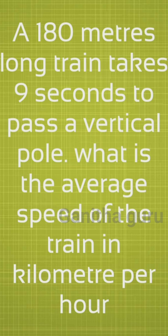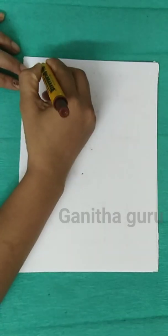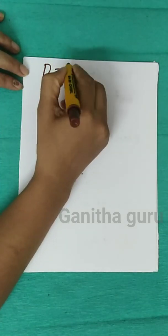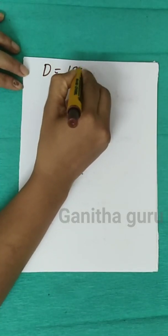A 180-meter long train takes 9 seconds to pass a vertical point. What is the average speed of the train in km per hour? The distance is 180 meters.